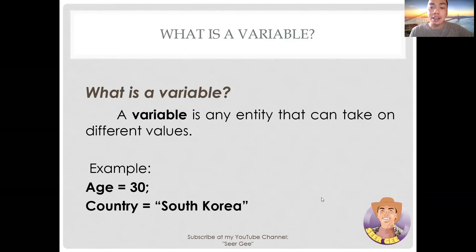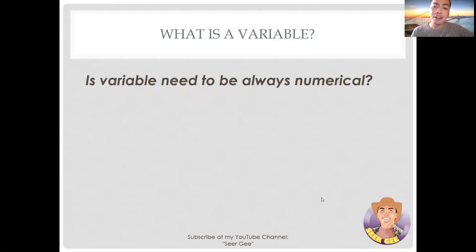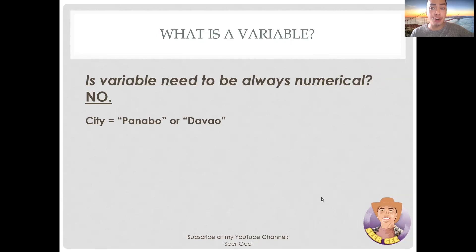Similarly, country can be considered a variable because a person's country can be assigned a value. Is a variable need to be always numerical? The answer is no. Variables are not always quantitative or numerical. The variable city consists of text values. We can, if it is useful, assign quantitative values instead of the text values, but we don't have to assign numbers in order for something to be a variable.